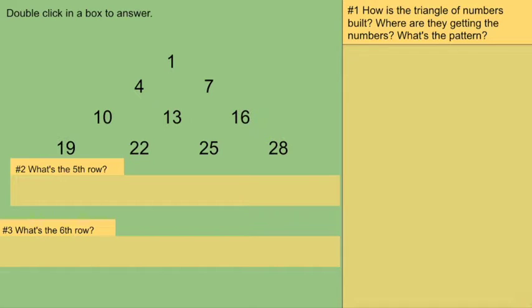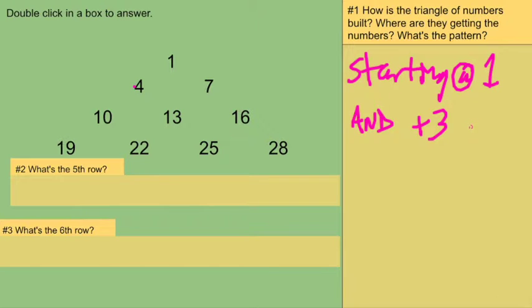These are always the questions that you want to be asking when you're faced with a pattern situation. Before you look at the questions they ask you, figure out what's going on. Basically, what's happening here is 1 plus 3 is 4, plus 3 is 7, plus 3 is 10. We're starting at 1 and adding 3 each time. And we've always got one more number in a row below than we had in the row above. So we got this little triangle thing going on.